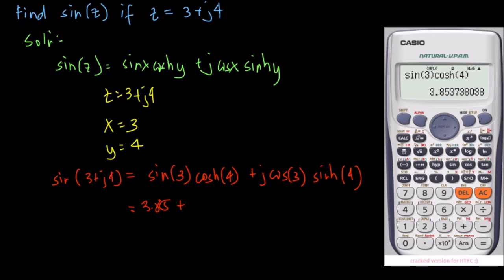So we just need to edit this one into hyperbolic sin 4, and this one into cos. So this is equal to negative 27.02 j, and this is now our answer.